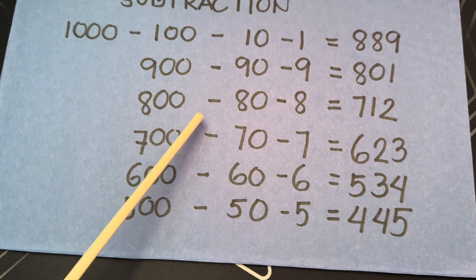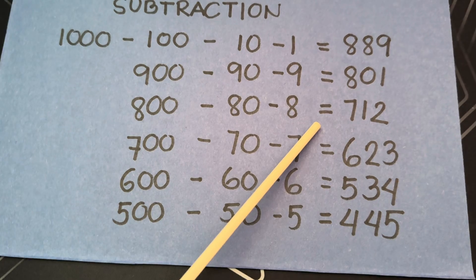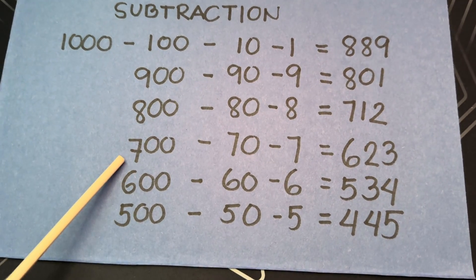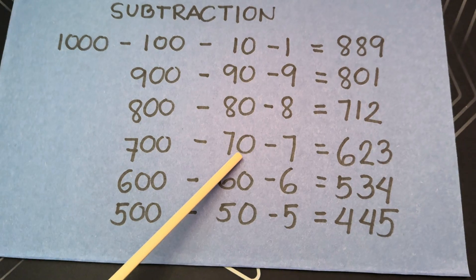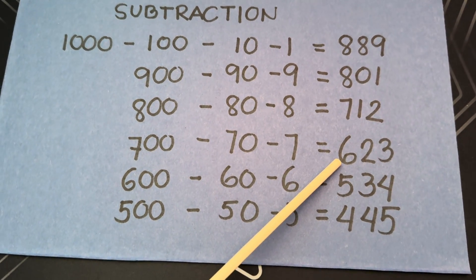800 minus 80 minus 8 is equals to 712. 700 minus 70 minus 7 is equals to 623.